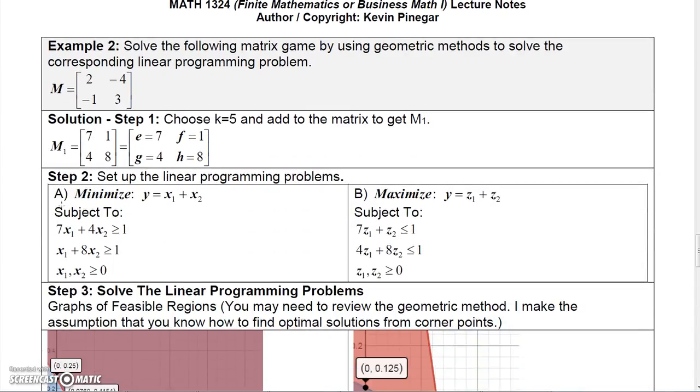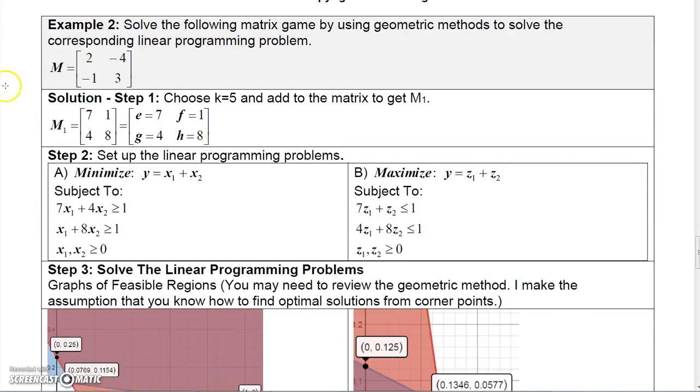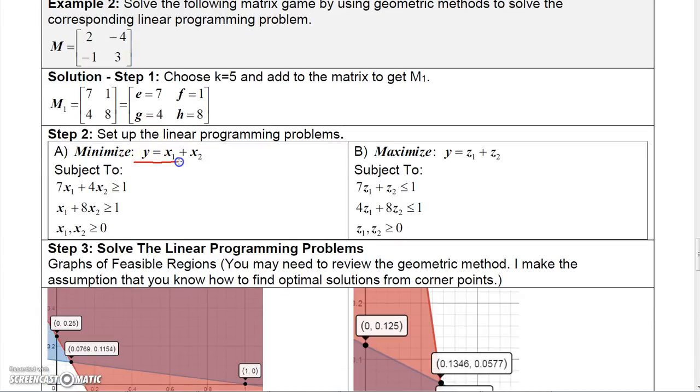Here's another one that you can do. I'm not going to go through it in the detail that I did on the previous one, but here's a game. I added 5 to this one. 2 plus 5 is 7, negative 4 plus 5 is 1, negative 1 plus 5 is 4, 3 plus 5 is 8. So E is 7, F is 1, G is 4, H is 8. You still want to minimize Y equal X1 plus X2, subject to these constraints. 7X1 plus 4X2 is greater than or equal to 1, 1X1 plus 8X2 is greater than or equal to 1, and X1 and X2 is greater than or equal to 0.